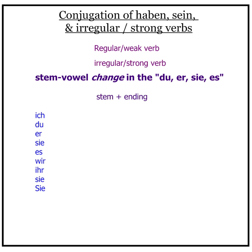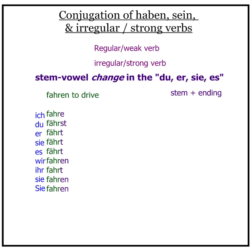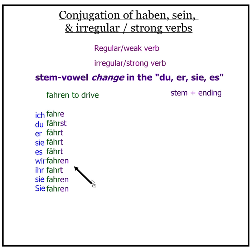Fahren, to drive. In the verb fahren, the stem vowel is an 'a'. When you conjugate it to du, er, sie, es, that 'a' changes to an umlautered 'ä'. So: ich fahre, du fährst, er/sie/es fährt. Wir fahren, ihr fahrt, sie/Sie fahren.